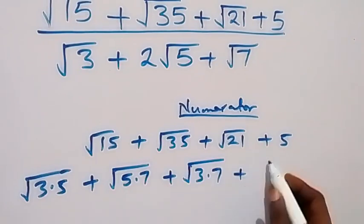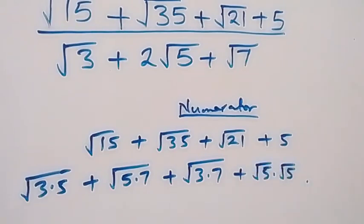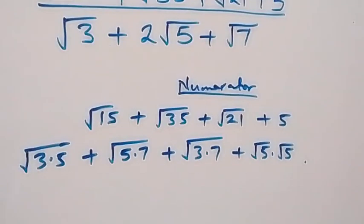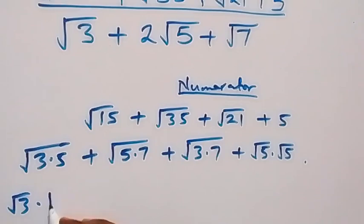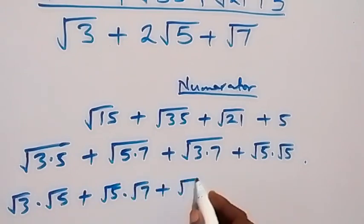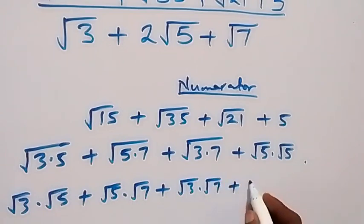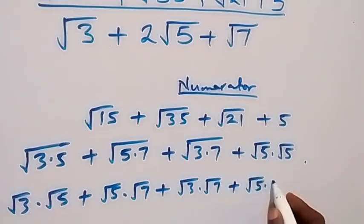Then, 5 can be written as root 5 times root 5. When we separate this, this will give us root 3 times root 5, then plus root 5 times root 7, then plus root 3 times root 7, then plus root 5 times root 5.